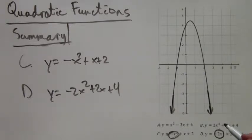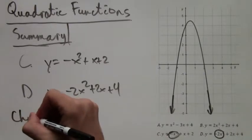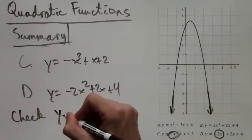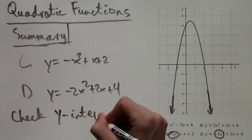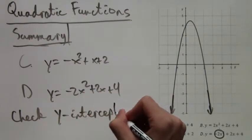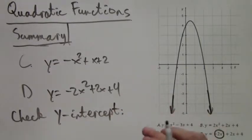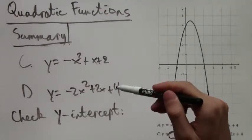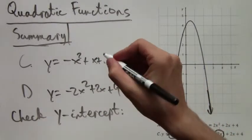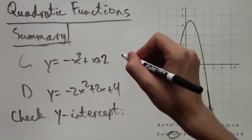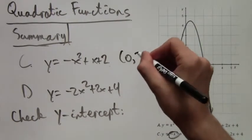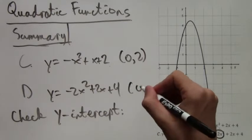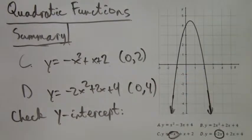So the next thing to check after the direction of the parabola, if it opens up or down, is the y-intercept which is also pretty easy to check both on the graph and in the formula. In these two functions we have the y-intercepts 2 and 4, that is the point 0,2 and the point 0,4 respectively on the functions C and D.